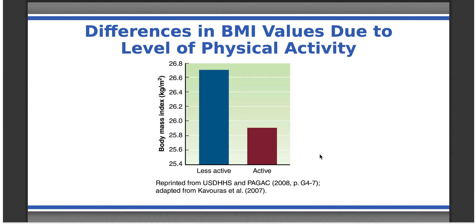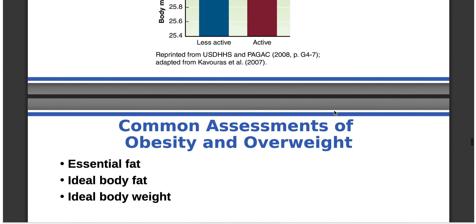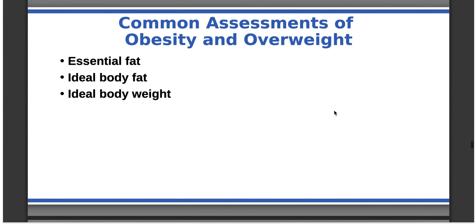Those who tend to be more active have lower BMIs. Looking at the scales that define overweight and obesity, it's really about one unit on the BMI scale, which isn't huge but is meaningful because there is a clear difference between those who are active and those who are less active. When it comes to assessing obesity and overweight, the simplest measurement is weight — looking at ideal body weight and BMI — but that doesn't paint the whole picture.